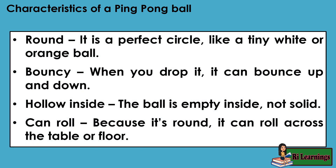Round — it is a perfect circle, like a tiny white or orange ball. Bouncy — when you drop it, it can bounce up and down. Hollow inside — the ball is empty inside, not solid. Can roll — because it's round, it can roll across the table or floor.